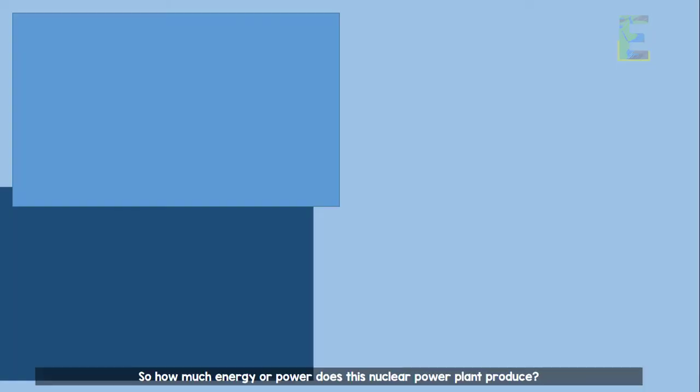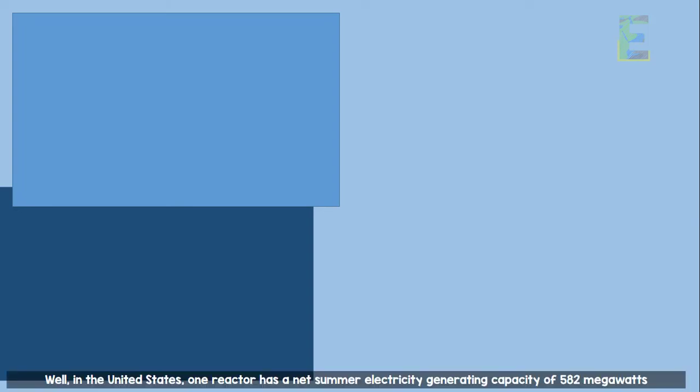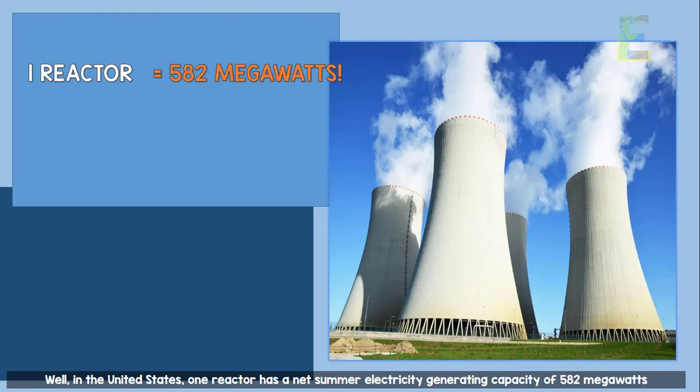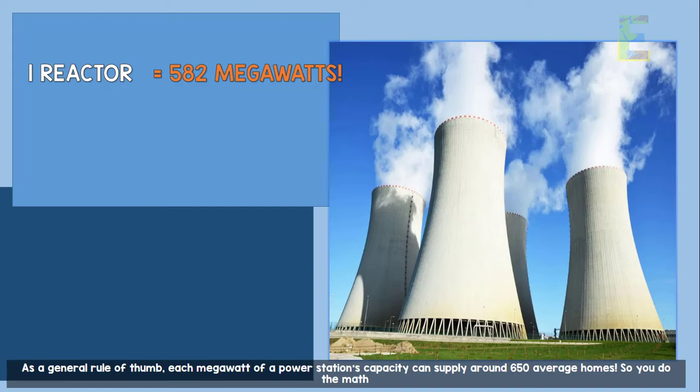So how much energy or power does this nuclear power plant produce? Well, in the United States, one reactor has a net summer electricity generating capacity of 582 megawatts. As a general rule of thumb, each megawatt of a power station's capacity can supply around 650 average homes. So you do the math.